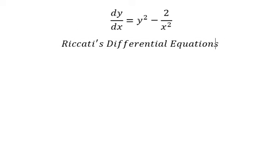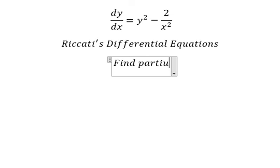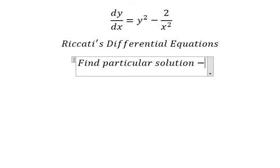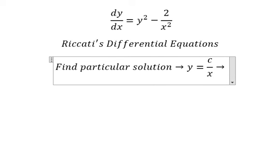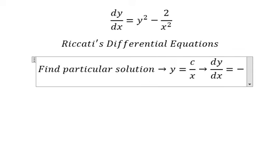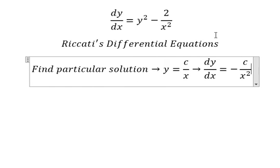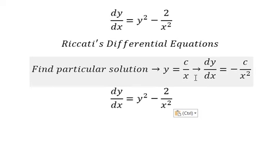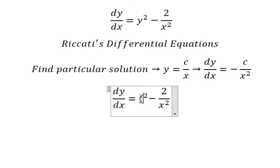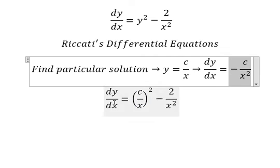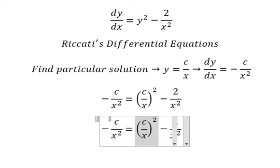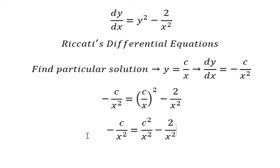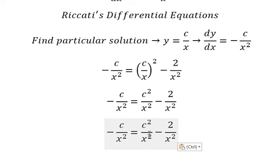In this situation we need to find a particular solution. I will put y equal to c over x. If we do the first derivative for both sides, we have negative c over x squared. Now I will substitute this into the equation — we have c squared over x squared. We need to simplify x squared for both sides.